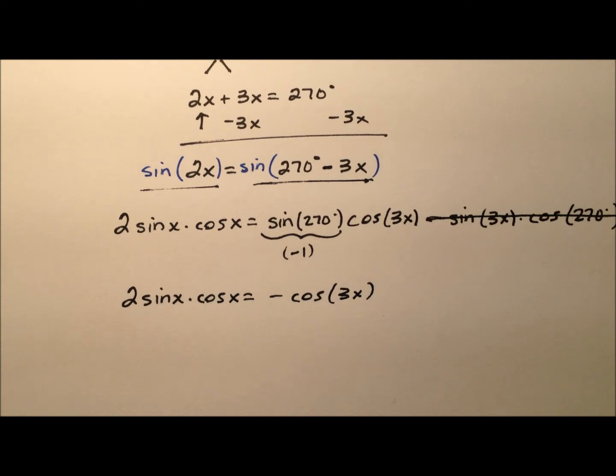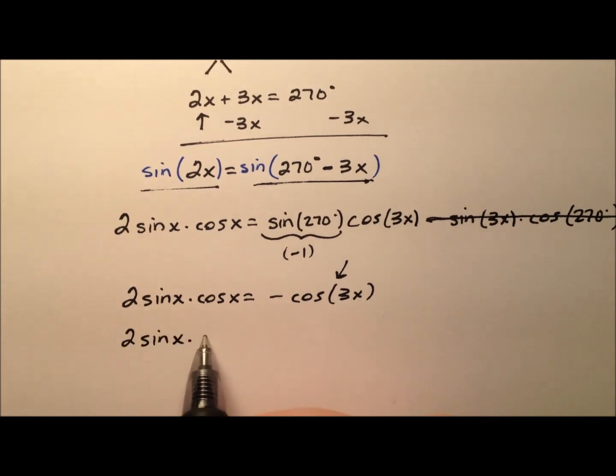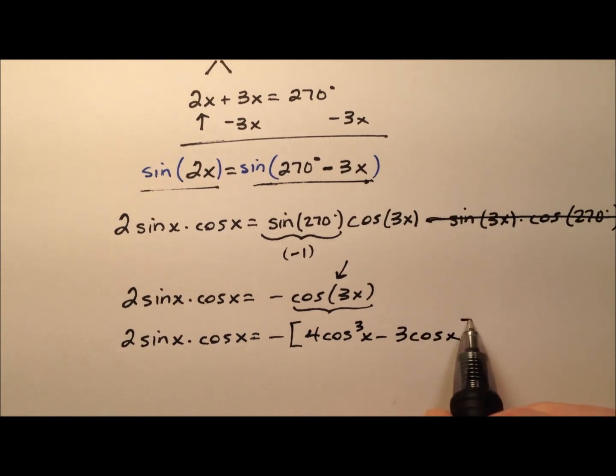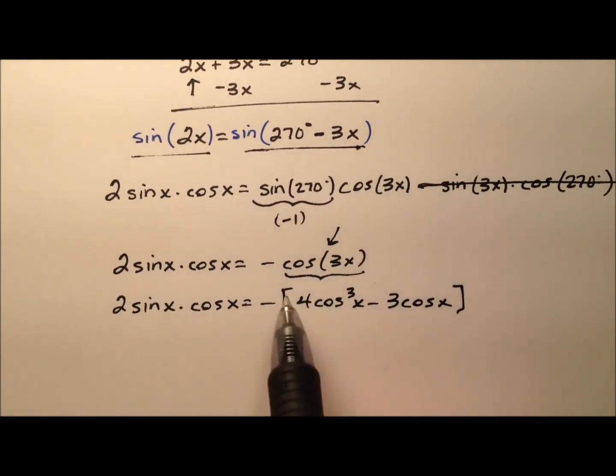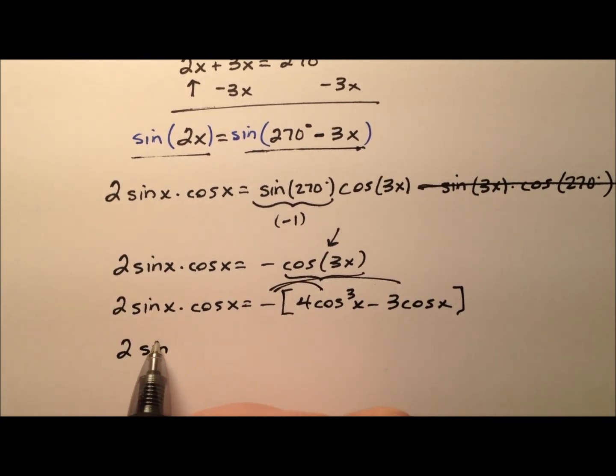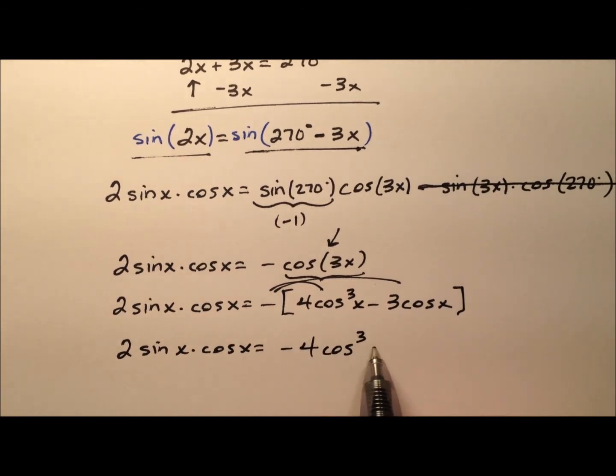So I can rewrite this entire thing as 2 sine x cosine x equals negative cosine of 3x. Well, that took care of a lot of stuff. It actually made this look a lot nicer. So let's use the triple angle identity for cosine and expand this. So we have 2 sine x times cosine x. And it'll be the negative or the opposite of. And the triple angle identity for cosine is going to be 4 cosine cubed x minus 3 cosine x. And on the right side, negative 4 cosine cubed x plus 3 cosine x.